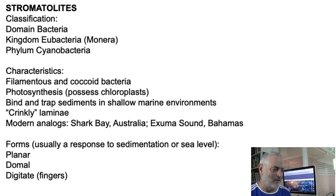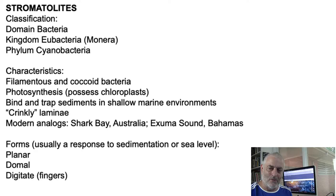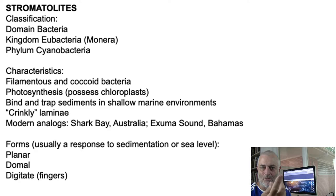In the categorization of stromatolites, we start in the domain Bacteria, kingdom Eubacteria — the true bacteria, formerly called Monera — and the phylum is Cyanobacteria, which includes filamentous and coccoid algae. Filamentous means like a string or filament, and coccoid means like a string of balls. These tiny microscopic cells line up along a filament. Most stromatolites result from the trapping of sediment by these filamentous and coccoid algae — it's a little bit like flypaper: the sediment sticks to the filaments or to the coccoids.